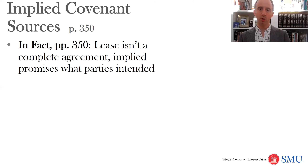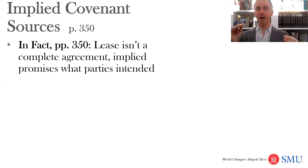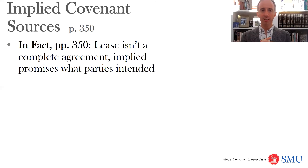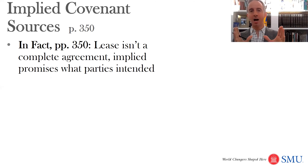So where are these implied covenants really coming from? It's kind of a theoretical question, but it has some practical importance. These different theories are explored on page 350 of your book. One theory is that this is actually what the parties intended — they couldn't be bothered to write down every last term of the lease. It's not a complete agreement, so we're going to fill in some implied promises of what the parties intended.